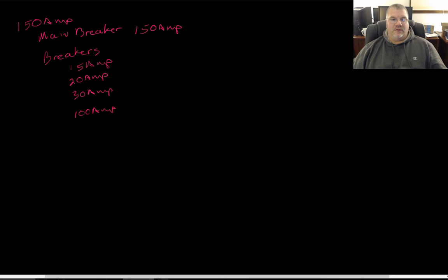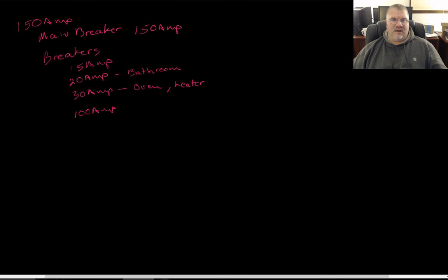Your breaker panel — also called a load center, main panel, or breaker panel — used to use screw-in fuses; some places still do. Breakers are typically 15-amp or 20-amp; you'll also have 30-amp breakers typically for ovens or electric heaters. I prefer using 20-amp throughout the house rather than 15-amp — it's only an extra $2–$3 for the breaker and $6–$10 for a roll of 12/2 wire. 15-amp breakers are typically used for lighting and outlets.